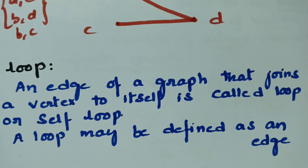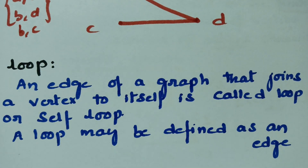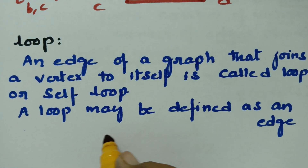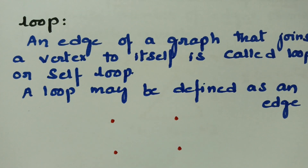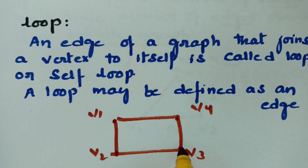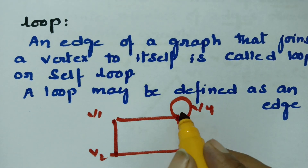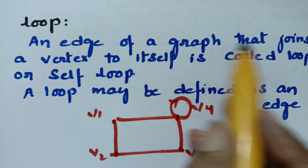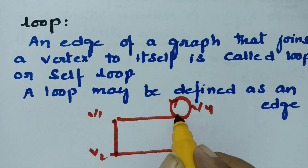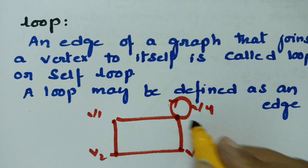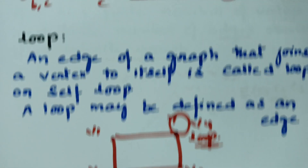A loop: if an edge of a graph joins a vertex to itself, it is called a loop or self-loop. For vertices V1, V2, V3, V4, all connecting lines are edges, and an edge that starts and ends at the same vertex is a loop. The initial point and the terminal point are the same. This is the loop.